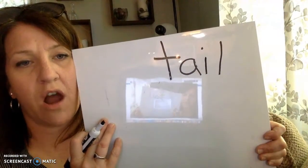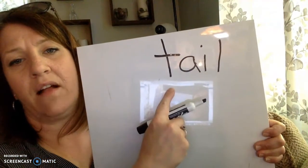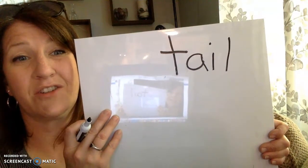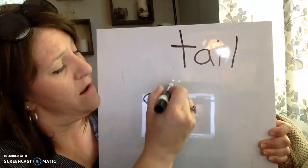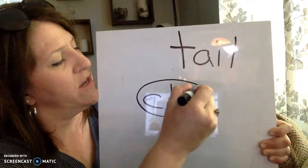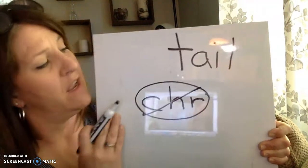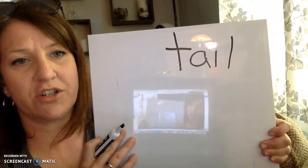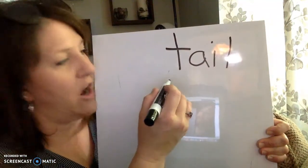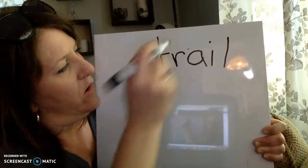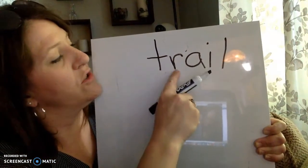And I want you to use your R blends to make the word change tail into trail. Now this one's really tricky because T-R sounds like it would be C-H-R. Trail. But there's no such blend as C-H-R. So when you hear that T-R and you think it's C-H-R, it's actually T-R. T-R. T-R. Ail.